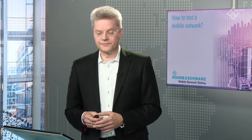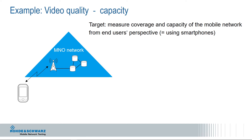First, the upper part of the triangle — the MNO network. For good video quality at this level, the mobile network needs to provide sufficient capacity and coverage to end users. In the case of live streaming video, real-time capability is also important, and we need to measure from the end users' perspective. Suitable tests here are capacity tests, and for coverage, the iPerf test — a test that requests a certain data rate, for example 500 kbps, continuously. A simple ping test measures the round-trip time of the network.